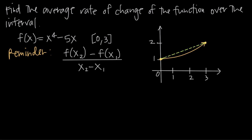In this video, we're talking about how to find the average rate of change of a function. In this particular problem, the function we've been given is f equals x to the 4th minus 5x. We've been asked to find the average rate of change of this function over the interval x equals 0 to x equals 3.